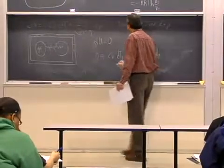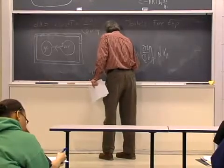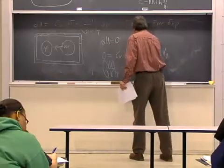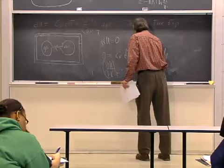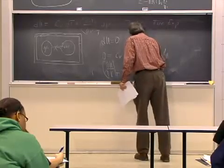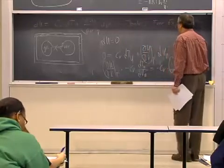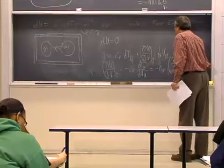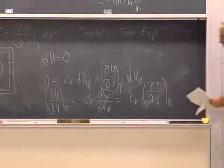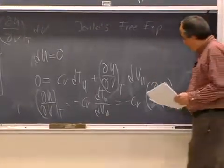And so we get du dv at constant t is equal to minus cv times dt u over dv u, or minus cv partial derivative of temperature with respect to volume at constant free energy, at constant internal energy.